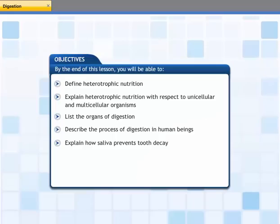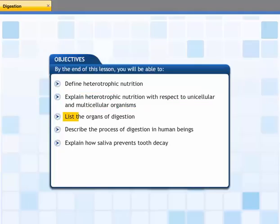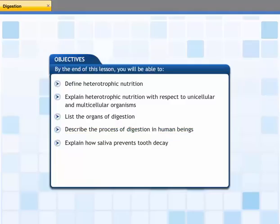This lesson is about nutrition in different types of organisms. By the end of this lesson, you will be able to: define heterotrophic nutrition; explain heterotrophic nutrition with respect to unicellular and multicellular organisms; list the organs of digestion; describe the process of digestion in human beings; and explain how saliva prevents tooth decay.